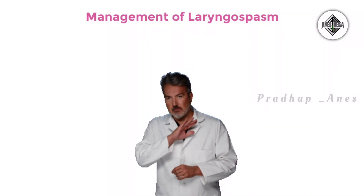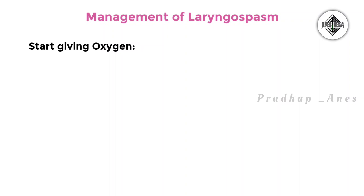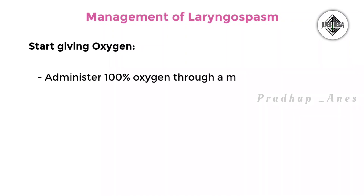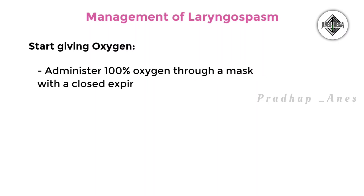Coming to management of laryngospasm: If you find these clinical features in a patient, first stop the procedure. If a laryngospasm occurs during a medical procedure, halt it immediately. Then start giving oxygen — administer 100% oxygen through a mask with a closed expiratory valve to maintain oxygenation.